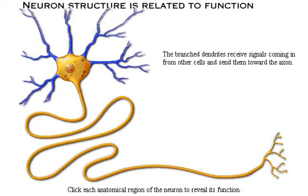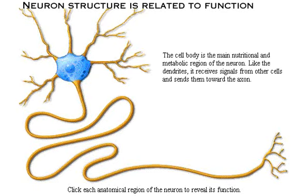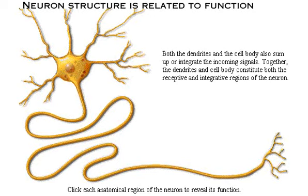The branched dendrites receive signals coming in from other cells and send them toward the axon. The cell body is the main nutritional and metabolic region of the neuron. Like the dendrites, it receives signals from other cells and sends them toward the axon. Both the dendrites and the cell body also sum up, or integrate, the incoming signals. Together, the dendrites and cell body constitute both the receptive and integrative regions of the neuron.